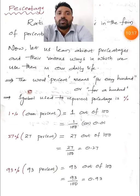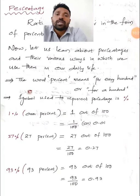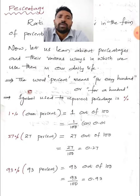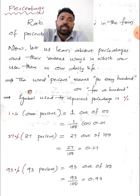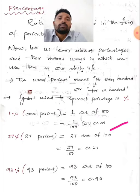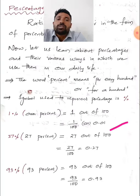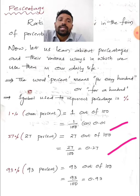Let us take some examples. 1% means 1 out of 100, written as 1/100, which in decimal form is 0.01. Similarly, 27% means 27 out of 100, i.e., 27/100 = 0.27. And 93% means 93 out of 100, i.e., 93/100 = 0.93.